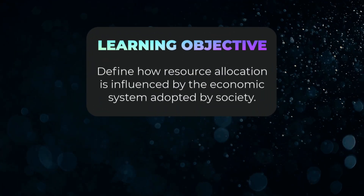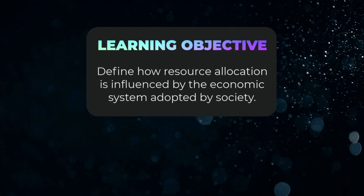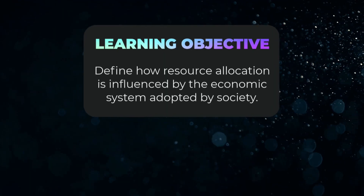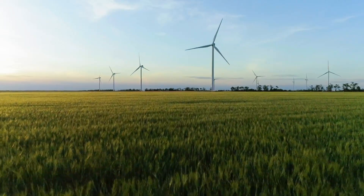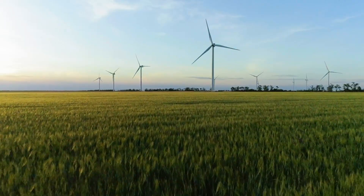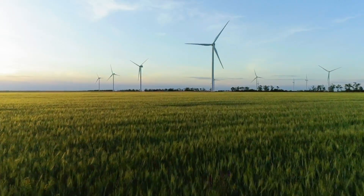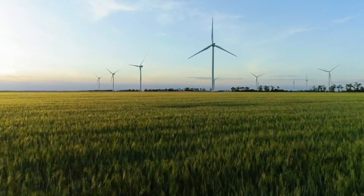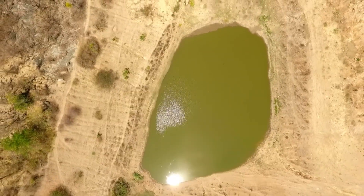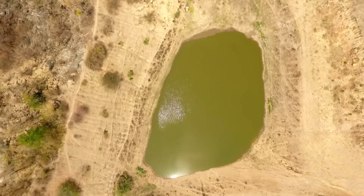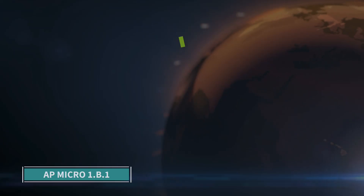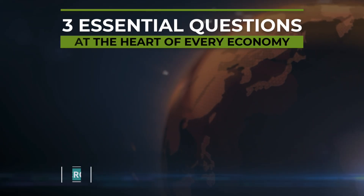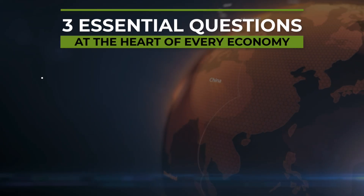In this video, our goal is to define how resource allocation is influenced by the economic system adopted by society. Because scarcity exists, consumers, firms, and governments must make choices about how to carefully allocate and use scarce resources to meet as many needs and wants as possible. If done carelessly, scarce resources could be wasted and needs could go unmet. Collectively, all economic participants strive to efficiently answer three essential economic questions at the heart of every economy.